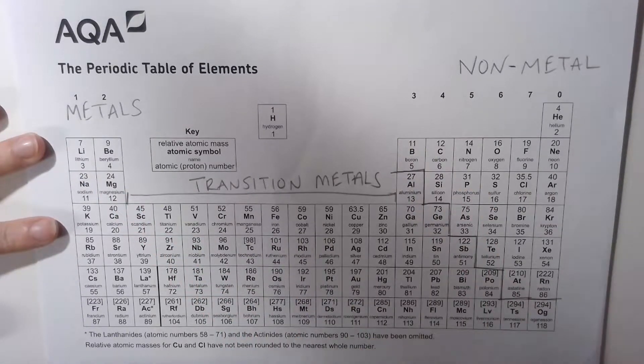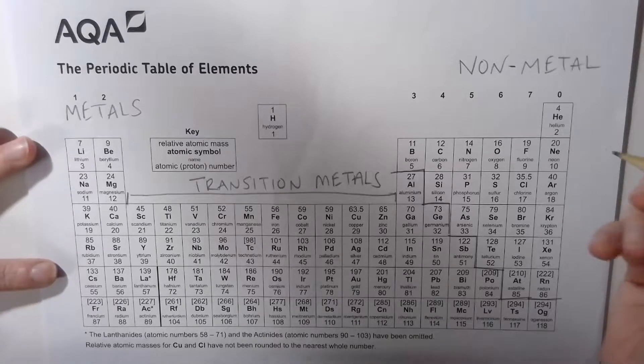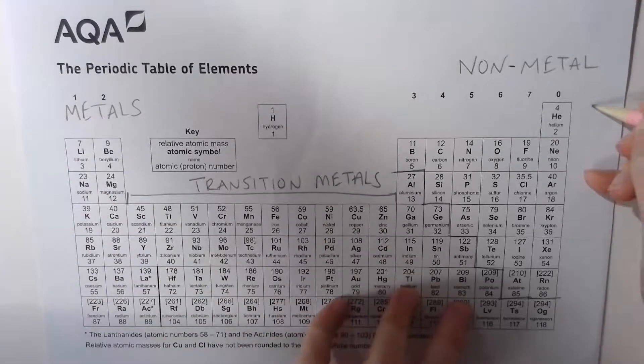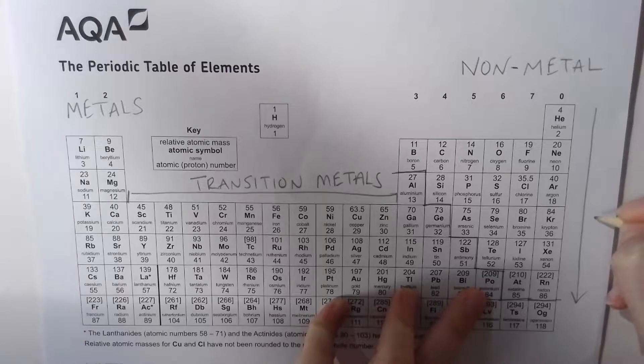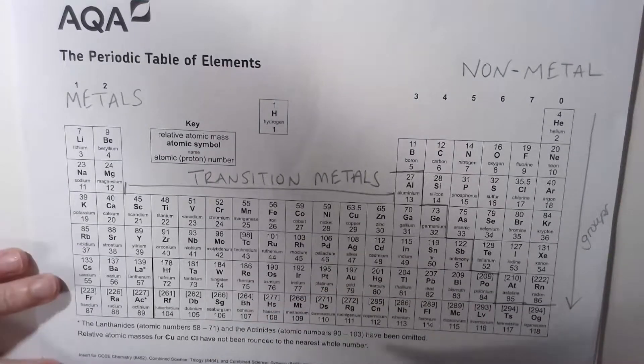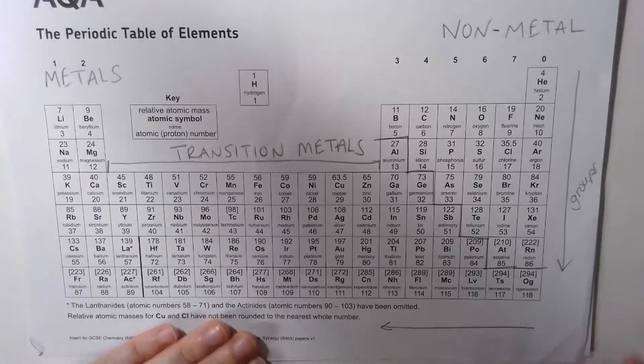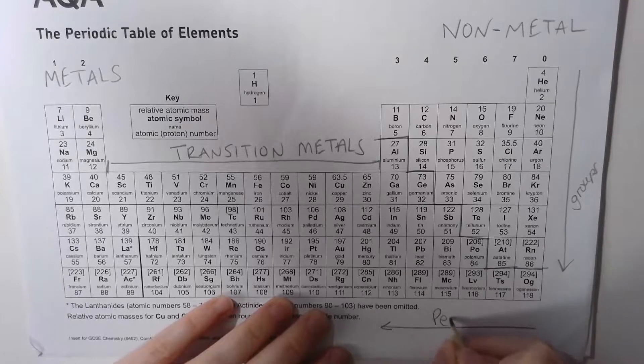Speaking of groups, the groups are the columns going down. Our periods are across, which is why it's called the periodic table. These are our periods.